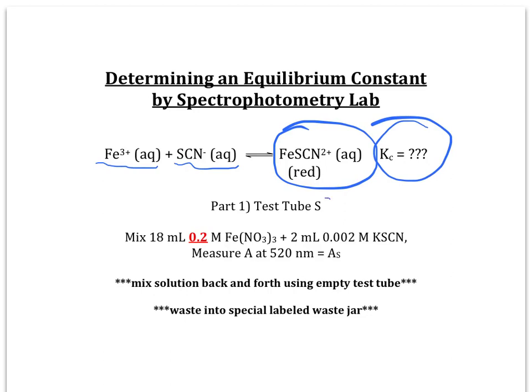So part one in the lab, you take a test tube, which you can label Test Tube S, and in it you're going to mix 18 milliliters of 0.2 molar Fe(NO3)3. The nitrate ions are just spectator ions, so they won't be involved in the net ionic equation, just the Fe3+ ions will. I put the 0.2 in red to make sure you're careful to grab the correct molarity, because later on you'll use a different molarity of iron(III) nitrate solution for the other five test tubes. Be careful that you're using the correct molarity.